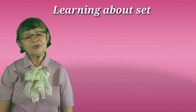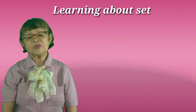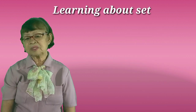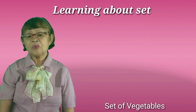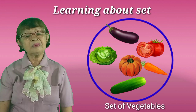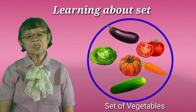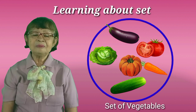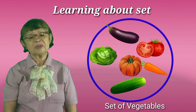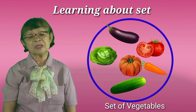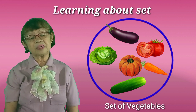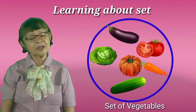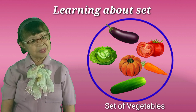So we go now to another set. This set is a set of vegetables. We have inside the set the elements which are the cabbage, the eggplant, the tomato, the carrots, the cucumber, and the squash. So this is a set of vegetables.